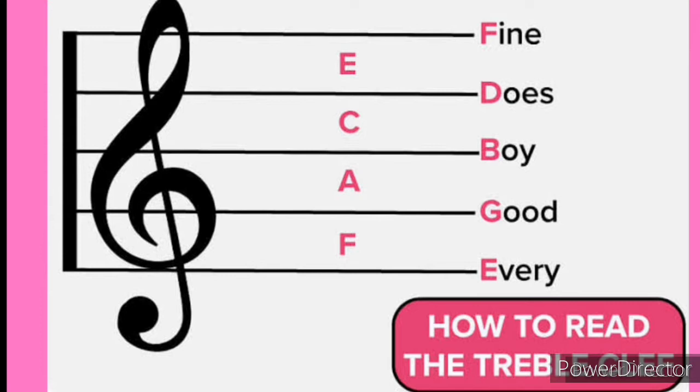The first one is the treble staff. The treble staff begins from the bottom. For lines: E, G, B, D, F. For spaces: F, A, C, E. For easy identification, it is Every Good Boy Does Fine, and FACE stands for our face.